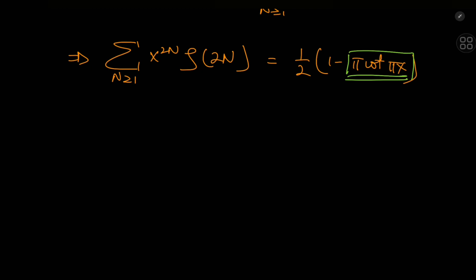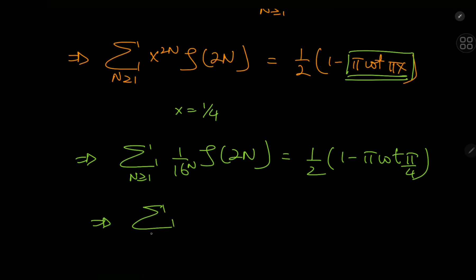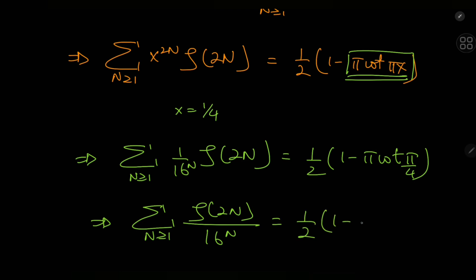However, you can derive a really nice result by plugging in x = 1/4. So (1/4)^(2n) = 1/16^n, and we have the sum over n of ζ(2n)/16^n equal to one half of (1 minus π·cot(π/4)). The cotangent of π/4 is just 1, so we get this aesthetically pleasing result: the sum over positive integers n of ζ(2n)/16^n equals (1 − π)/2.